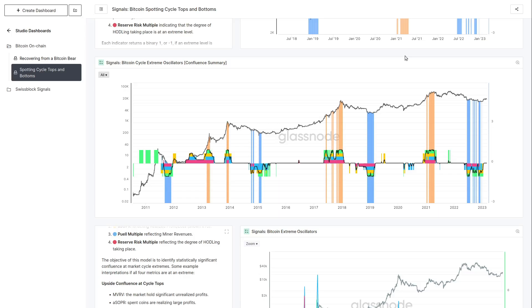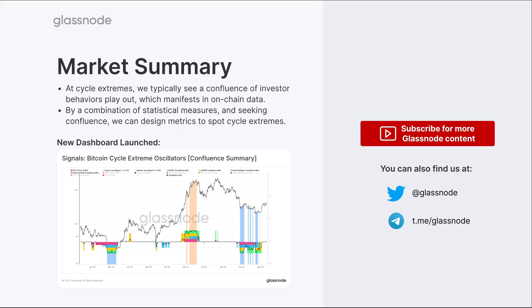If you have any questions, please reach out in the comments and let me know if you enjoy this type of model - it helps our team build tools that make the on-chain world more approachable. Both the MVRV dashboard and this confluent extremes dashboard are available for advanced members with a free trial link in the description below. Thanks for tuning in - hopefully you found it useful, see you in the next video.